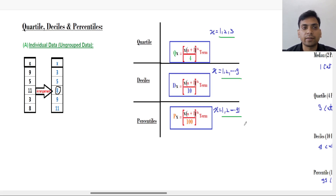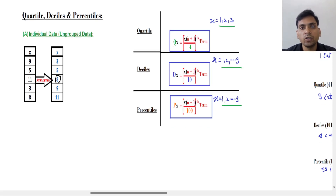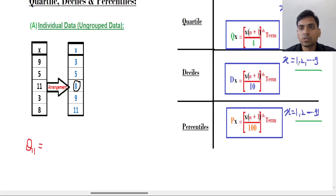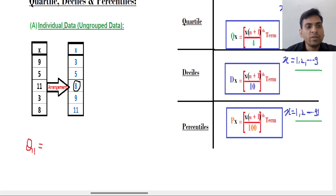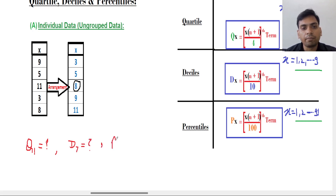The choice is yours — you can find any one. First we are finding the first quartile. Our target is the first quartile. I will explain this first quartile and then we will focus on Decile 5, and any percentile like P40 or P30 we can find. Then Decile 7, and for percentile we will find the 80th percentile. These are our targets.